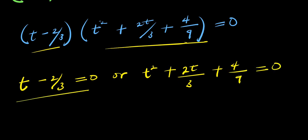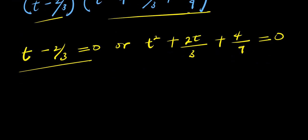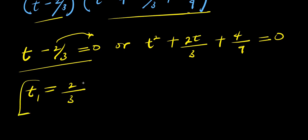So let's solve the first one here. What I'm going to do is move this over, it becomes positive. I have t equals 2 over 3. So this is my t₁.